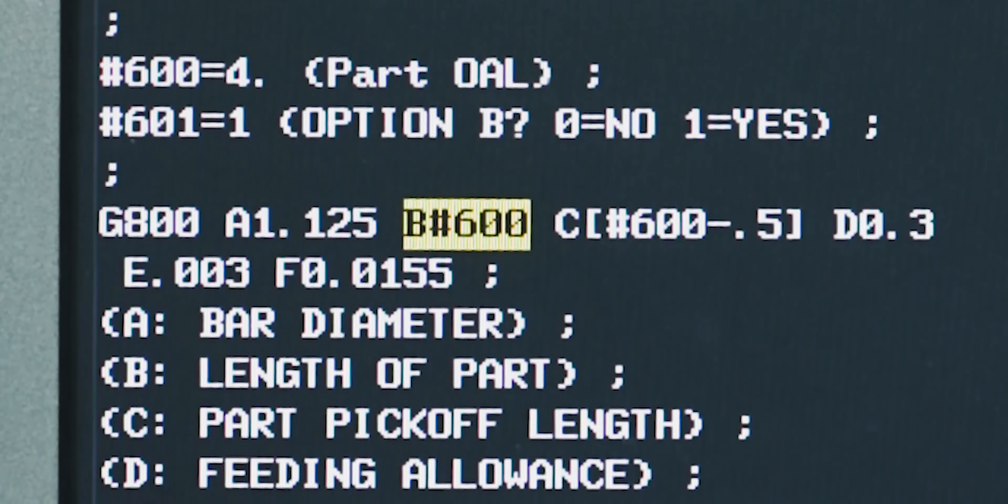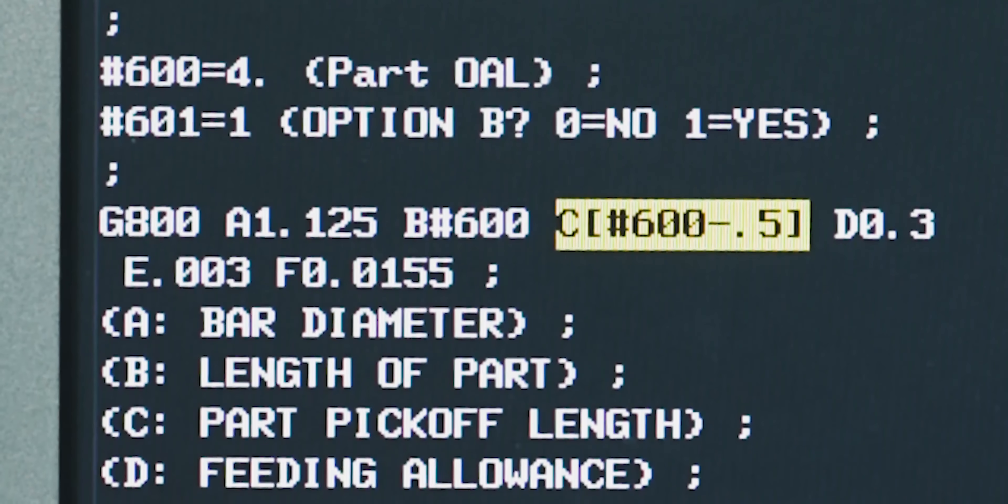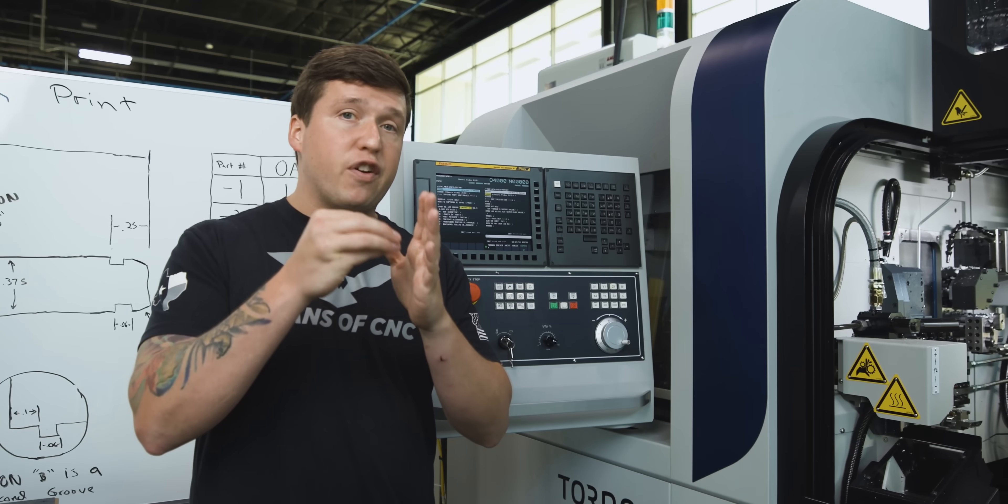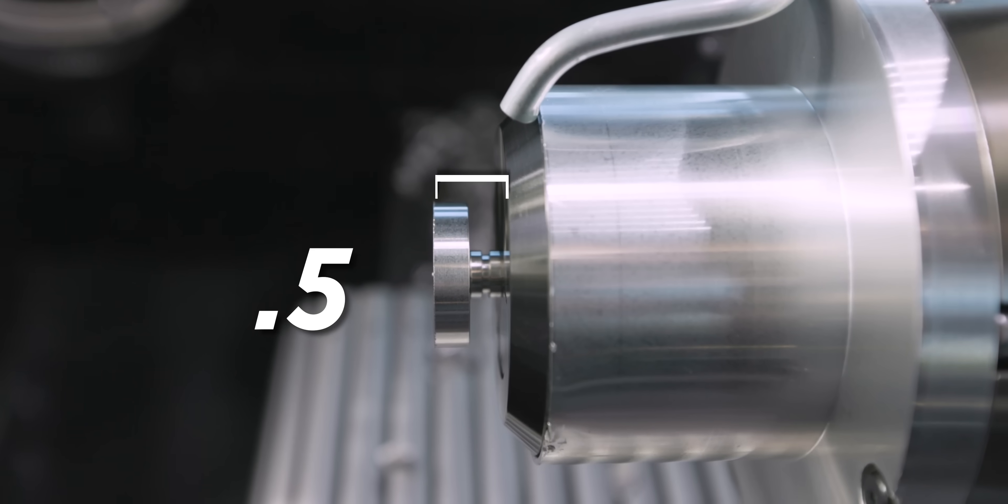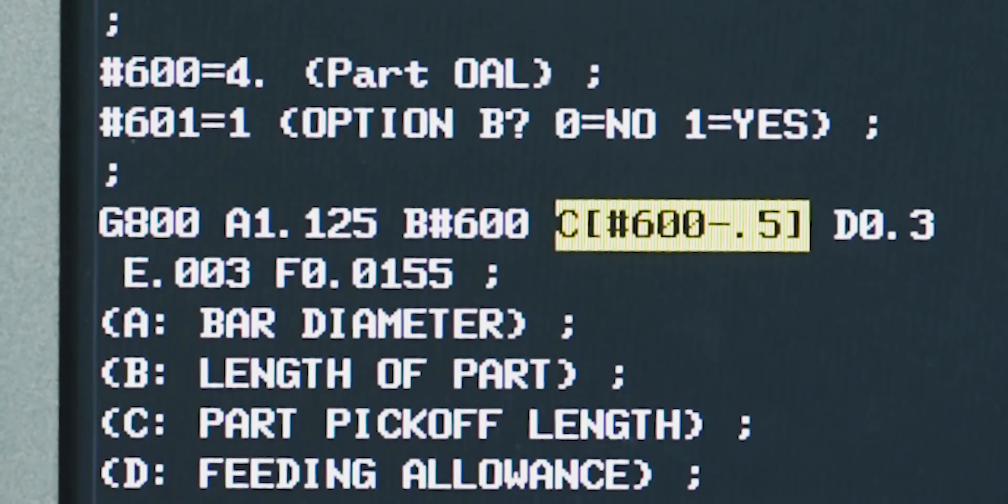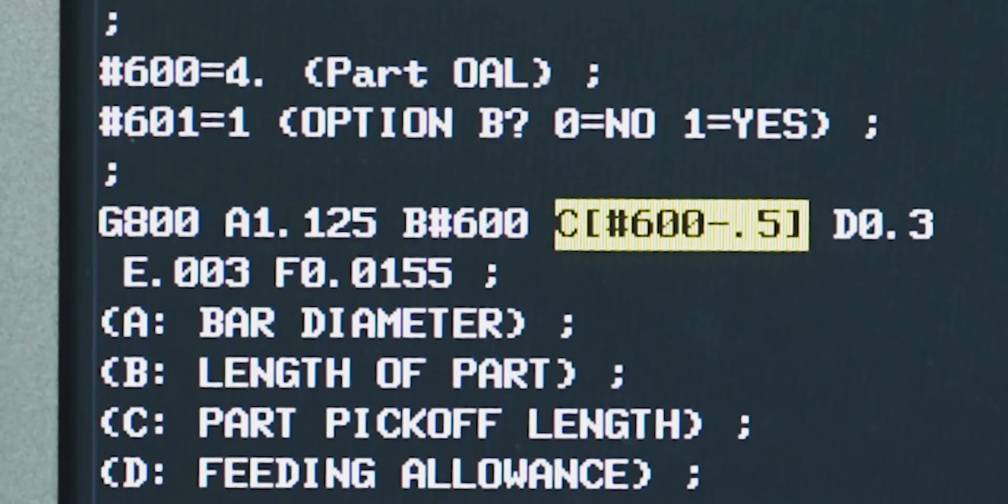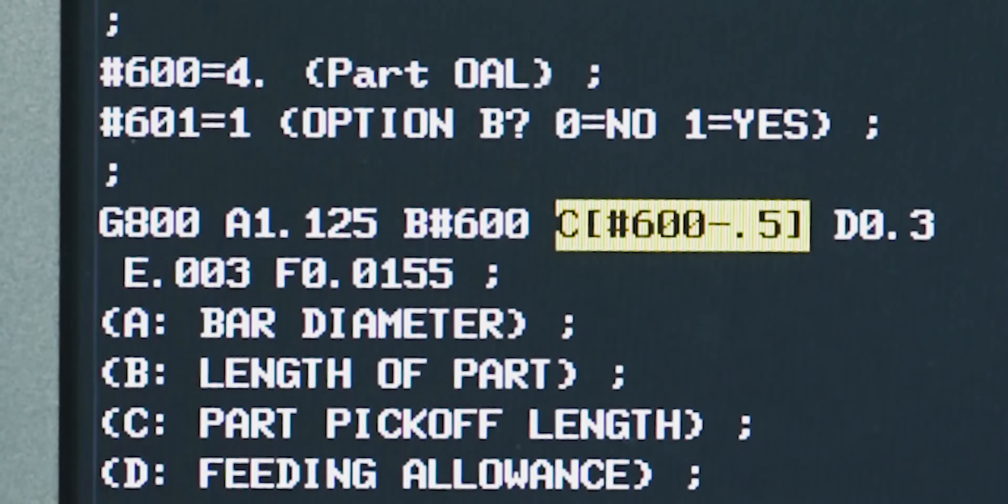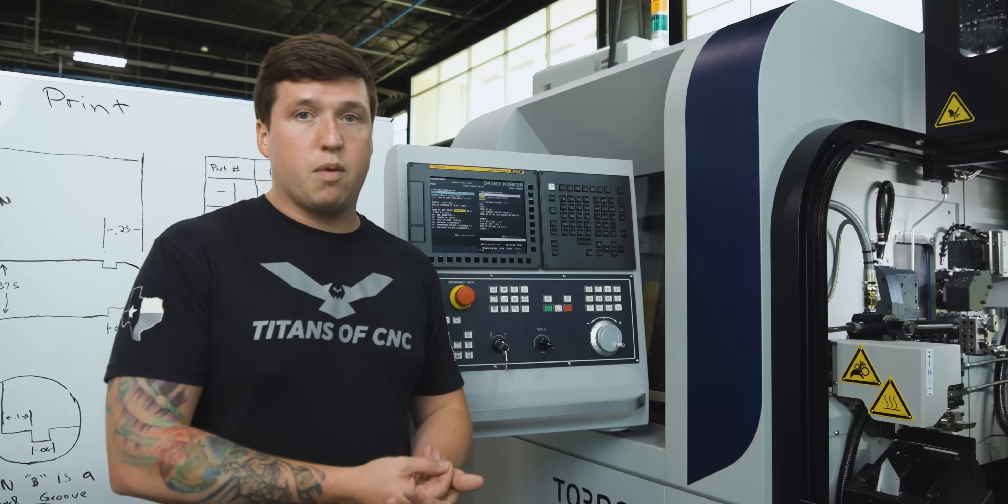After that is your C value. C is how far the subspindle comes on to grab the part. I want to have a half inch sticking out each time, so I put my overall length minus half an inch. When you change this 600 up here, it's going to automatically update everything immediately when you press start.